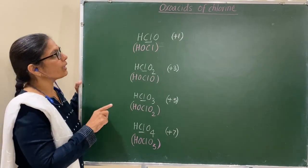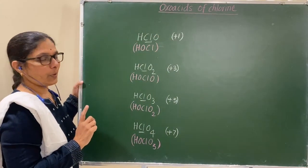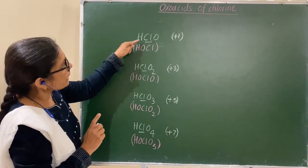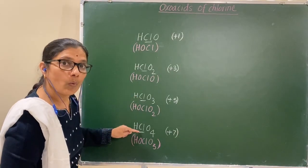In this session, we are going to learn oxoacids of chlorine. Now see here, HClO, HClO2, HClO3, HClO4.